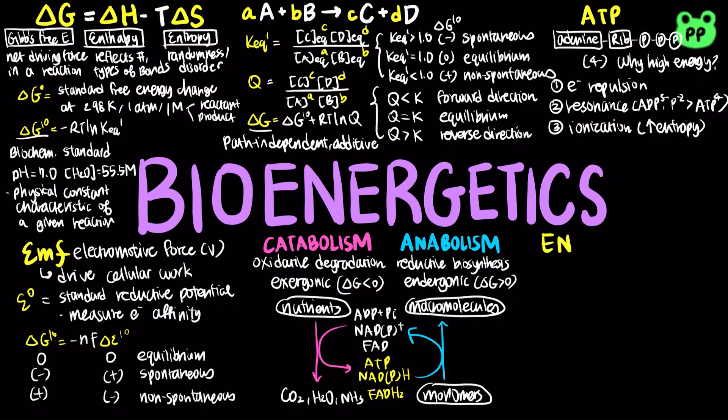The energy charge is an index used to measure the energy status of biological cells. It is an important factor in metabolic regulation in determining whether catabolic or anabolic process dominates at the moment. Energy charge is defined as the concentration of ATP plus half the concentration of ADP over the concentration of ATP plus the concentration of ADP plus the concentration of AMP.